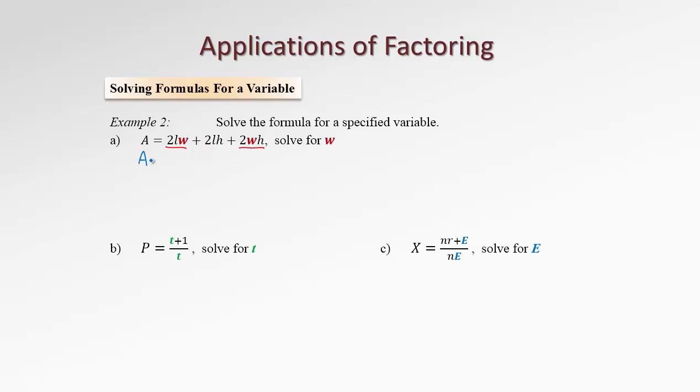We'll get A minus 2LH equals 2LW plus 2HW. So now if we want to have W in one spot, we can use factoring strategy.